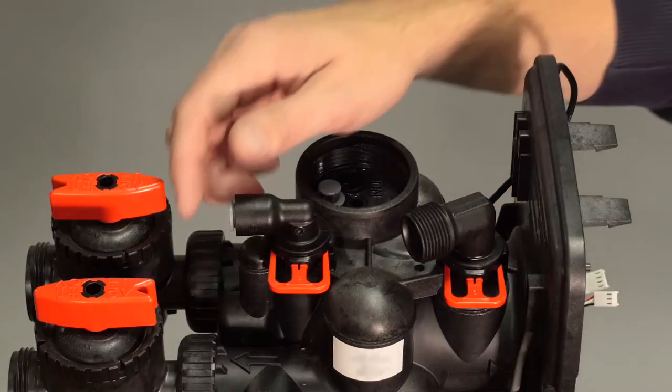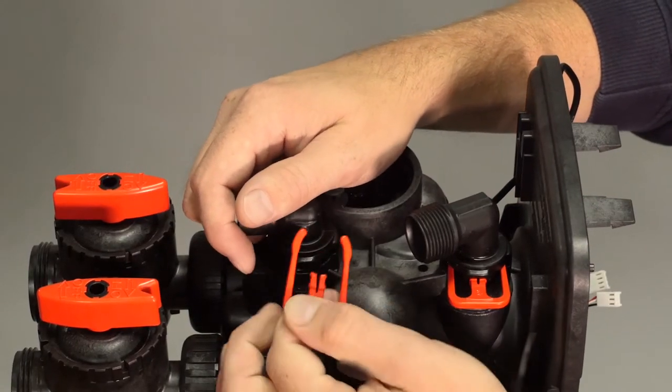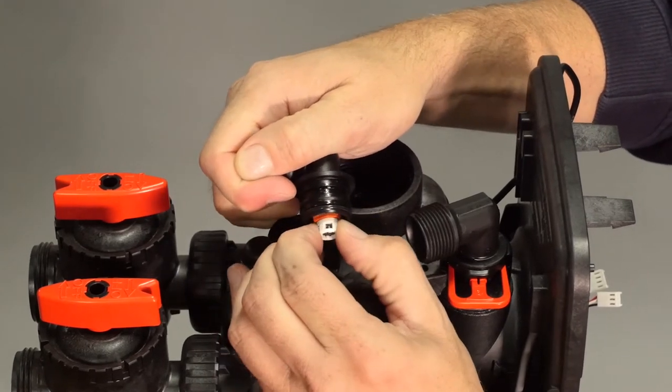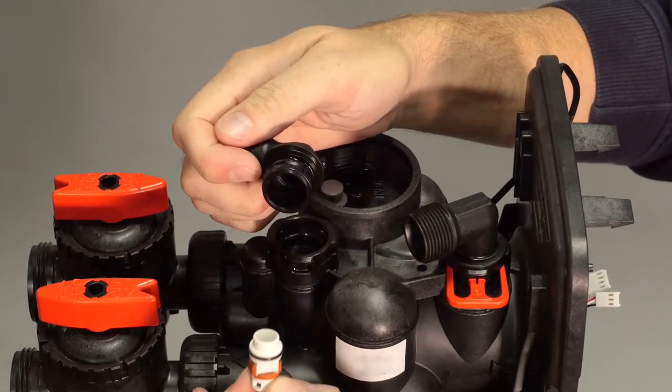To release the refill elbow, pull out the locking clip and pull the elbow up. The refill flow control retainer can be pulled straight out of the refill elbow.